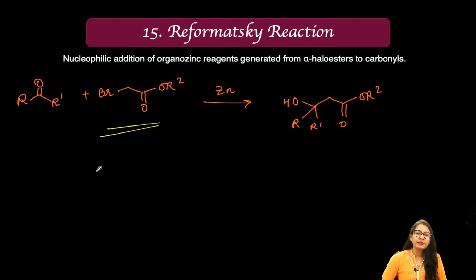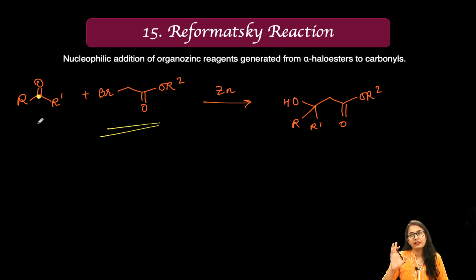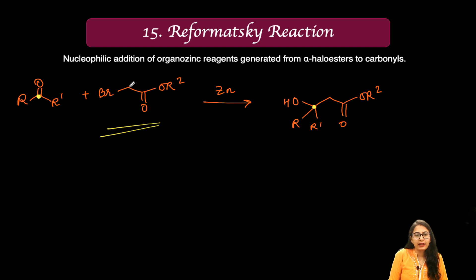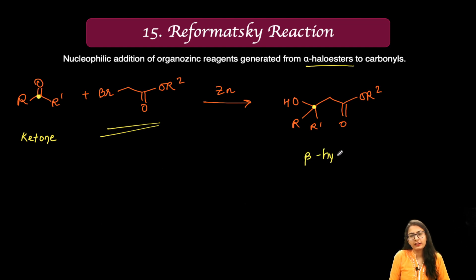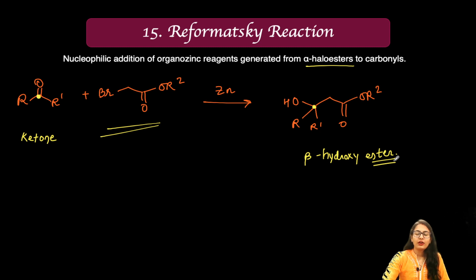Once the enolate forms, it attacks the carbonyl carbon of the ketone — similar to an aldol product or Claisen ester condensation — to give an alcohol. Starting from a ketone and an alpha-haloester, you ultimately get a beta-hydroxy ester as the product.